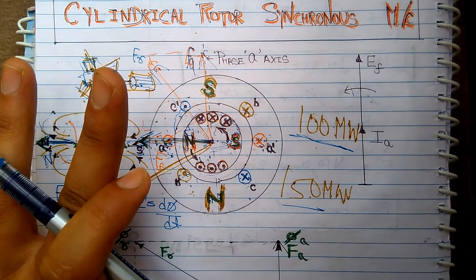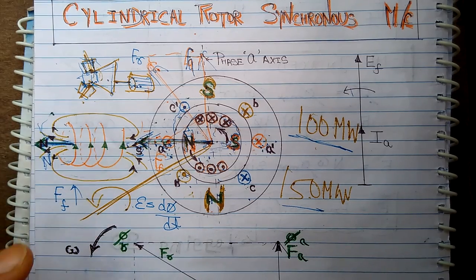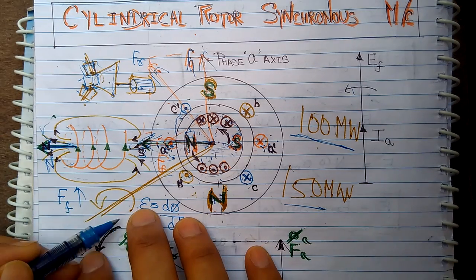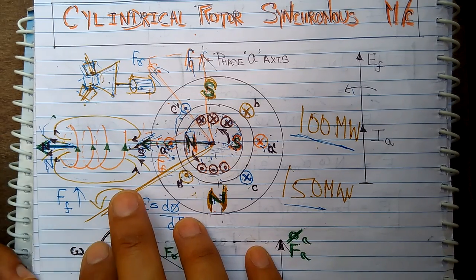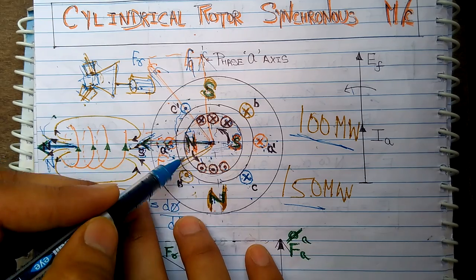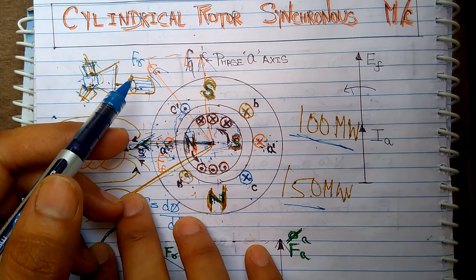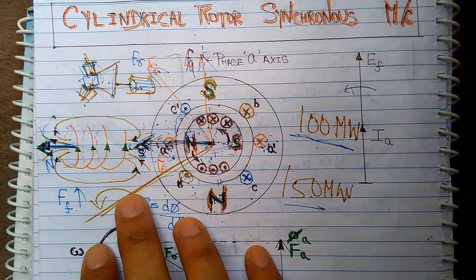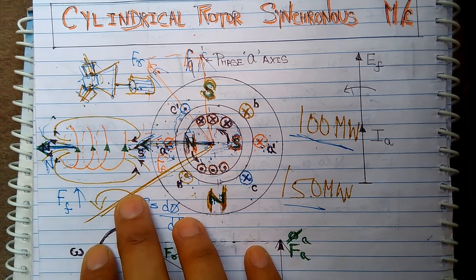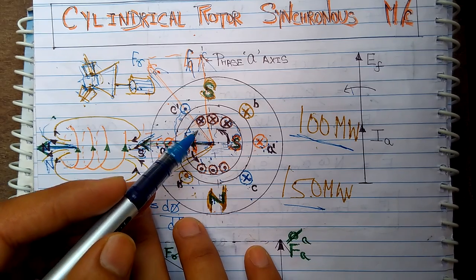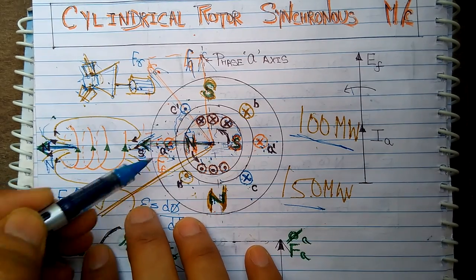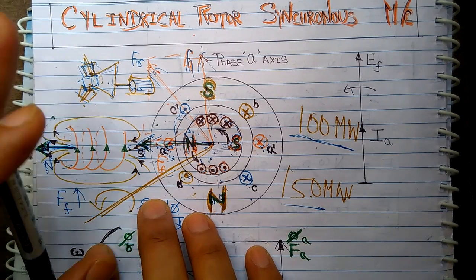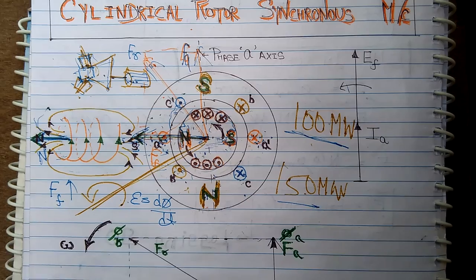Now I have two torques running on this rotor. One is the anti-clockwise direction torque produced by mechanical means — by the turbine and steam. The second is electromagnetic torque produced in the clockwise direction due to Lenz's law. If I want my rotor to rotate at constant speed, these two torques must be balanced. If the two torques are balanced, the rotor rotates at constant speed because there will be neither acceleration nor deceleration.